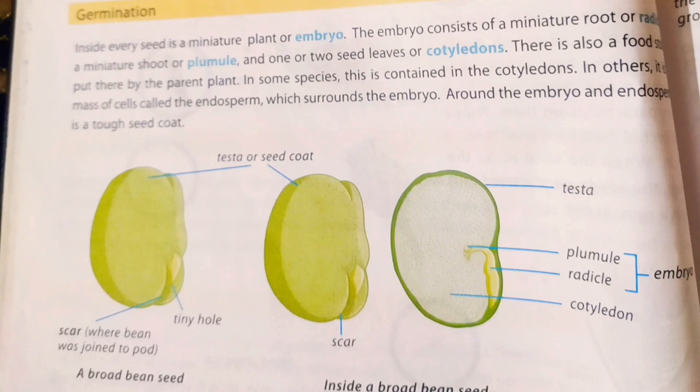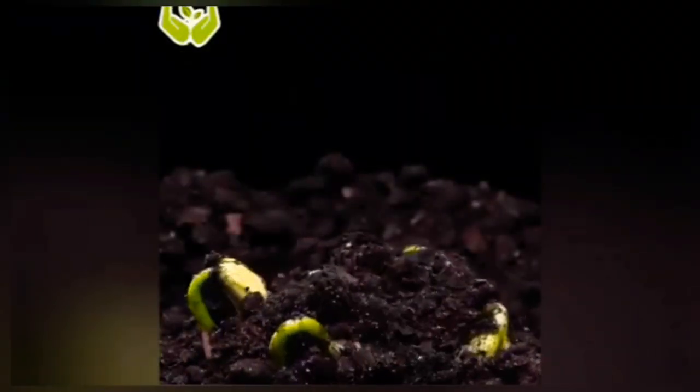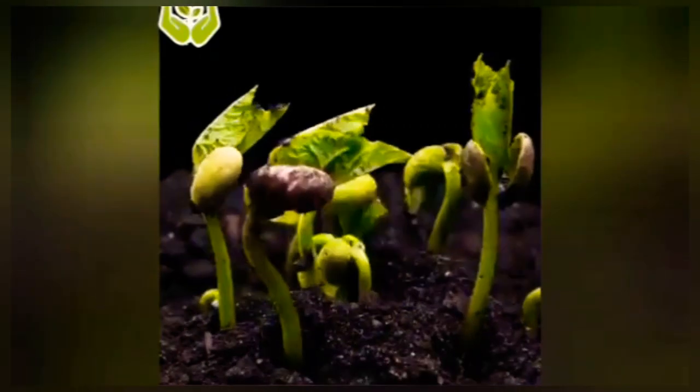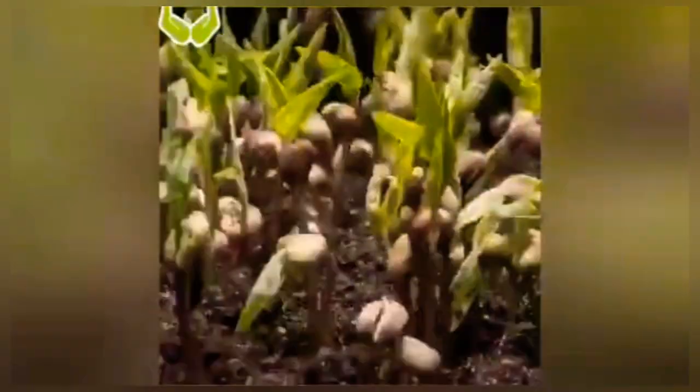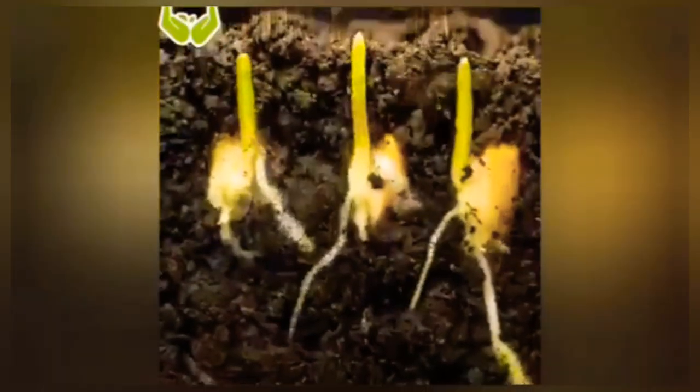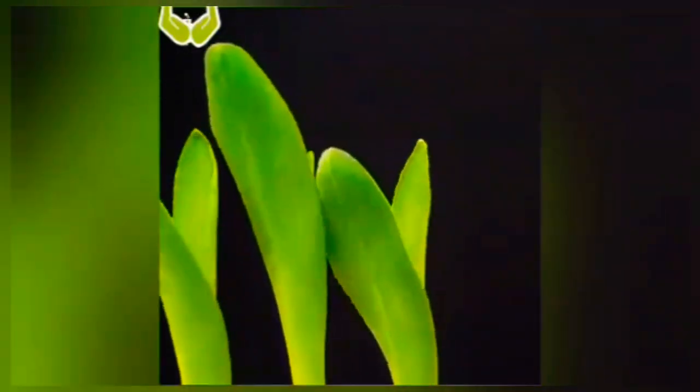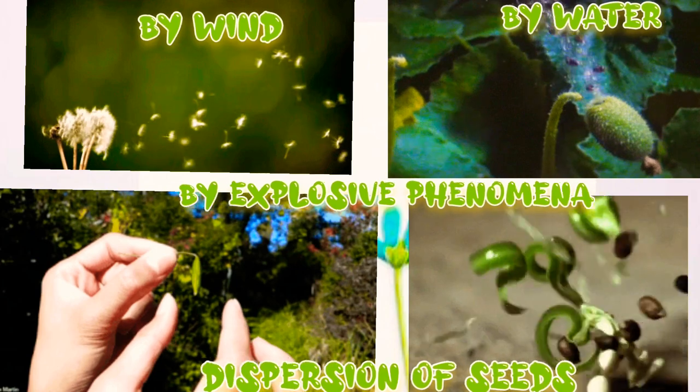Seeds have a zygote — the fertilized embryo — and seeds have two leaves or one leaf depending on their type. The cotyledons are the leaves in seeds. Cotyledons are full of food; that food tissue is also called endosperm. When seeds get a suitable situation and water, they start growing. The cotyledons grow into roots and shoots, as you can see in the video.